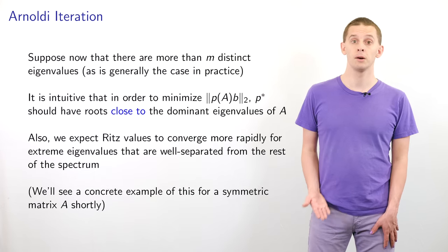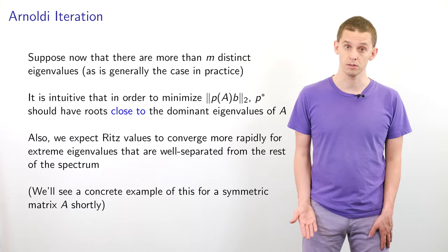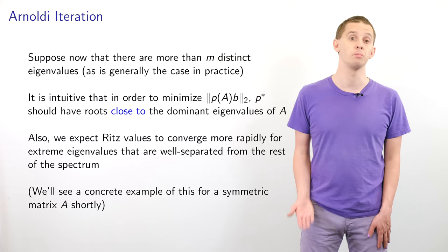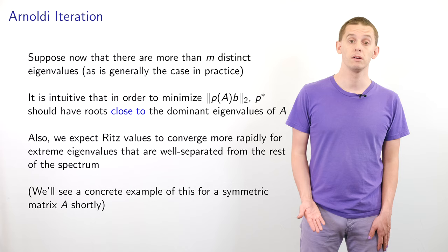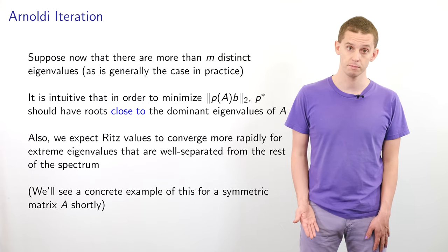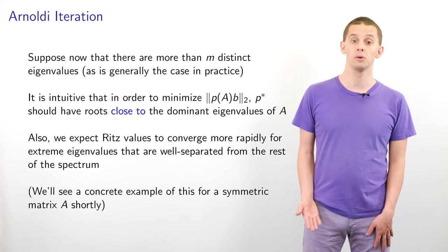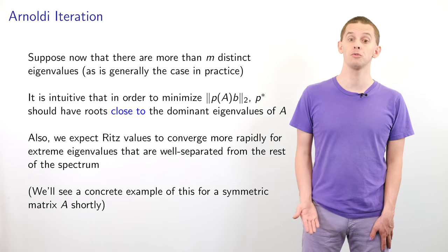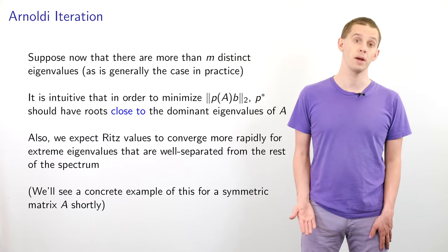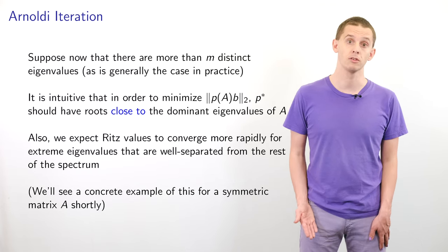Suppose now that there are more than M distinct eigenvalues, as is generally the case in practice. It's intuitive that in order to minimize ‖P(A)B‖, P* should have roots that are close to the dominant eigenvalues of A. We also expect that the Ritz values will converge more rapidly for extreme eigenvalues that are well separated from the rest of the spectrum, and we'll see a concrete example of this for a symmetric matrix A shortly.